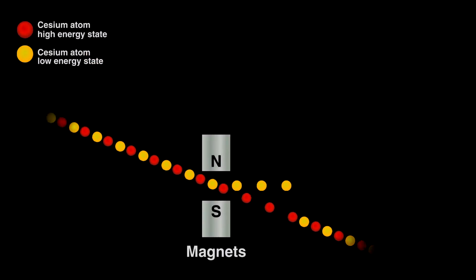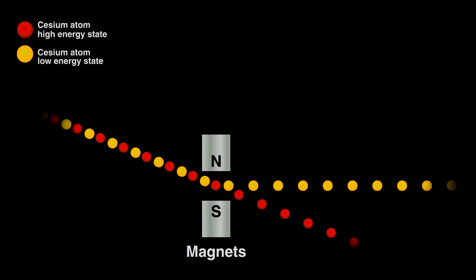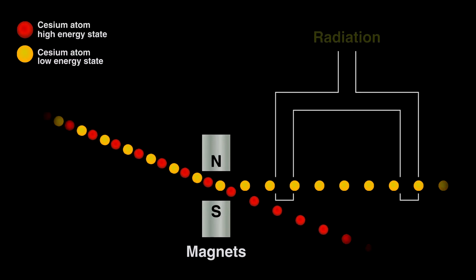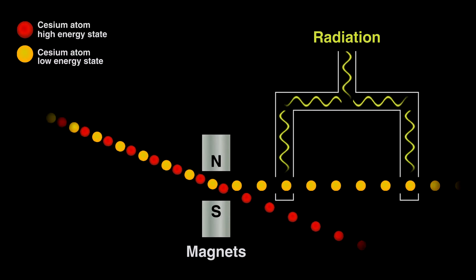One, they can be separated by a magnet, and two, the lower energy atoms can be converted to the higher energy ones if we bombard cesium with the right radiation.